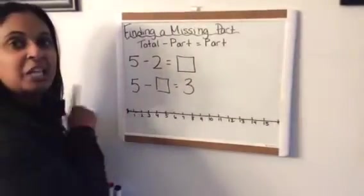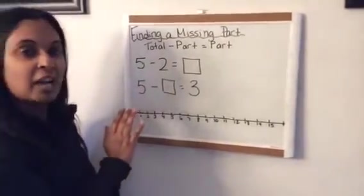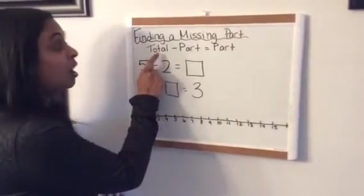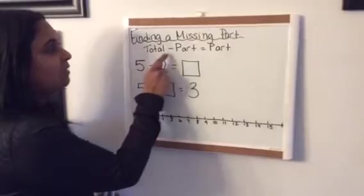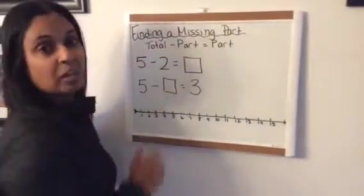So I'm just going to remind you about how a subtraction sentence is made. Whenever we're writing a subtraction sentence, we always start with a total, so that's your big number. Always starting with your big number, and then taking away a part, which is a smaller number, which will equal what's left over, which is your other part.